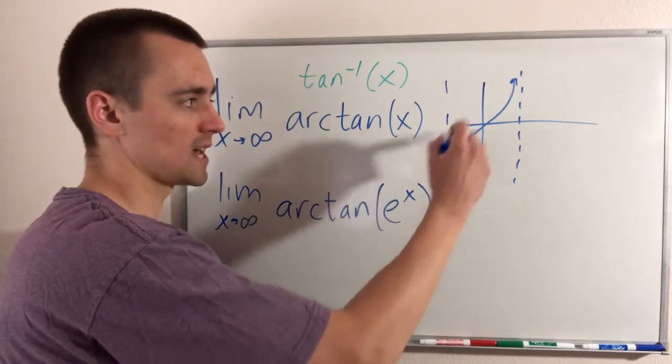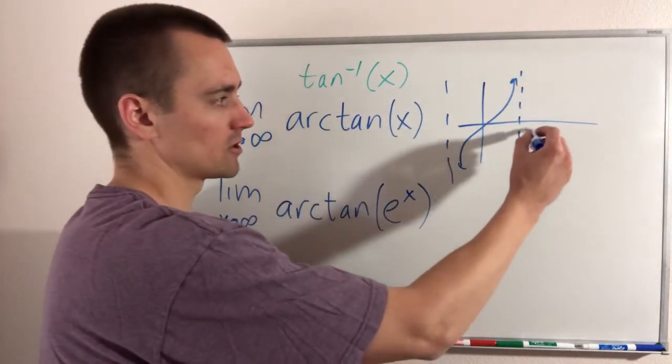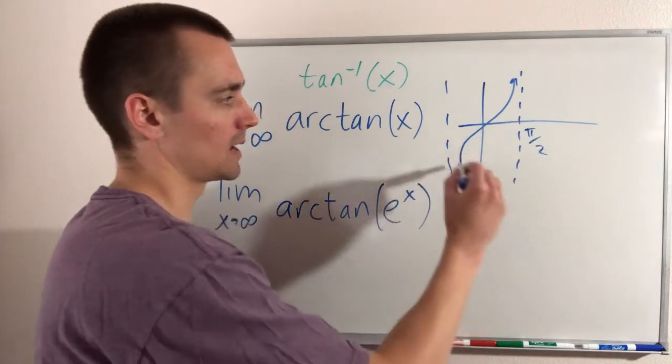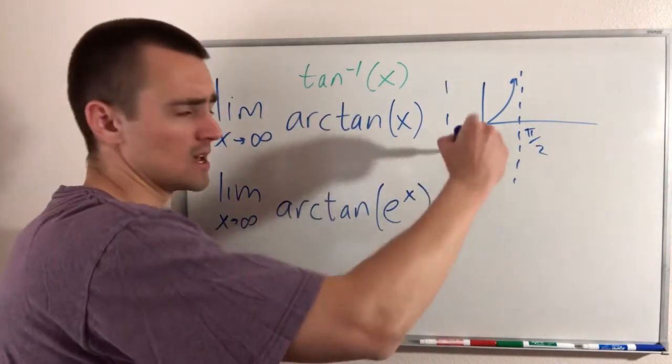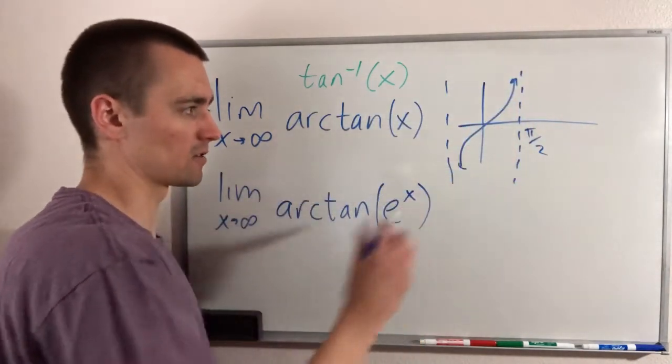This is what the graph of tan x looks like. It has a vertical asymptote at pi over 2, and it has a vertical asymptote at negative pi over 2. And at both those asymptotes, it just goes up to infinity and down to negative infinity.